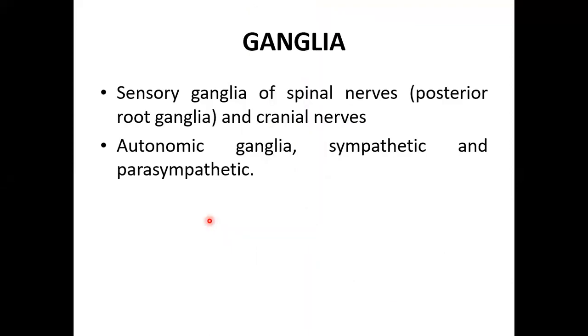A ganglion is a collection of nerve cells with surrounding neuroglia located outside the central nervous system. Types include the dorsal root (posterior root) ganglion associated with spinal and cranial nerves, and the autonomic ganglia, which include sympathetic and parasympathetic ganglia.